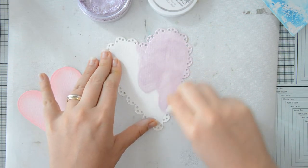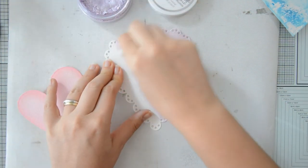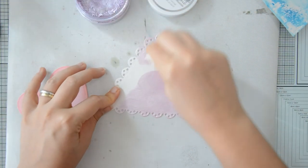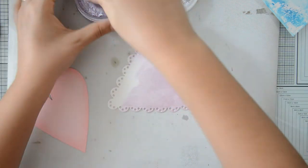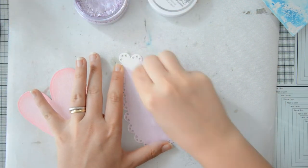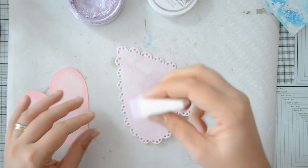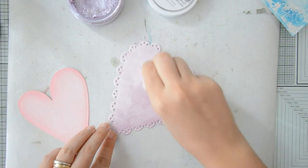Because I wanted to add some subtle shine to my project, I decided to use Nuvo Mousses for my scalloped heart. I picked the color Lilac Lavender and I applied it over the entire area using a makeup sponge.